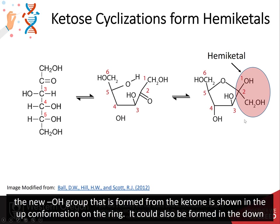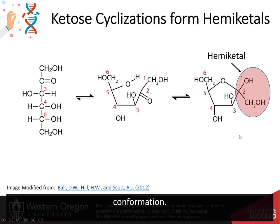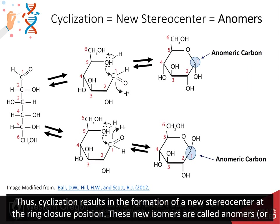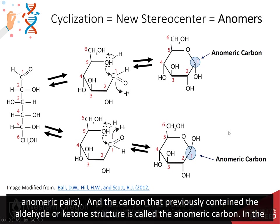In this case, the new hydroxyl group that is formed from the ketone is shown in the up conformation on the ring, although it could also be formed in the down conformation. Thus, cyclization results in the formation of a new stereocenter at the ring closure position. These new isomers are called anomers or anomeric pairs.